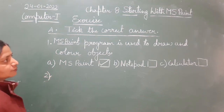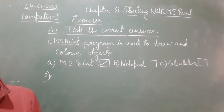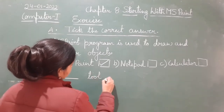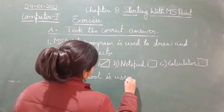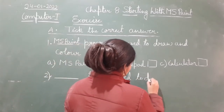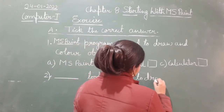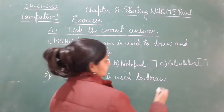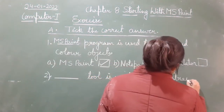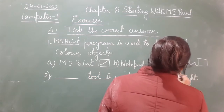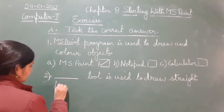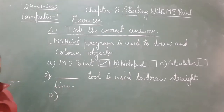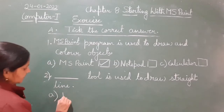Second question: dash tool is used to draw a straight line. We need to fill in which tool is used to draw a straight line. The three options are: A — Line, B — Circle, C — Brush.